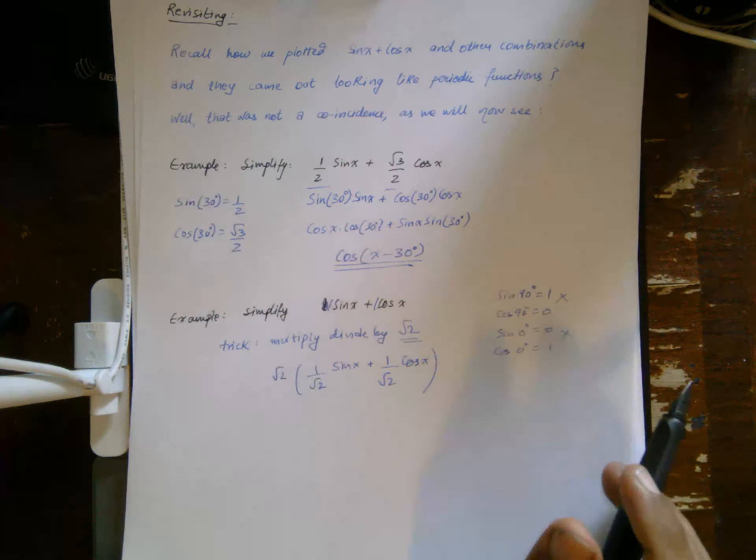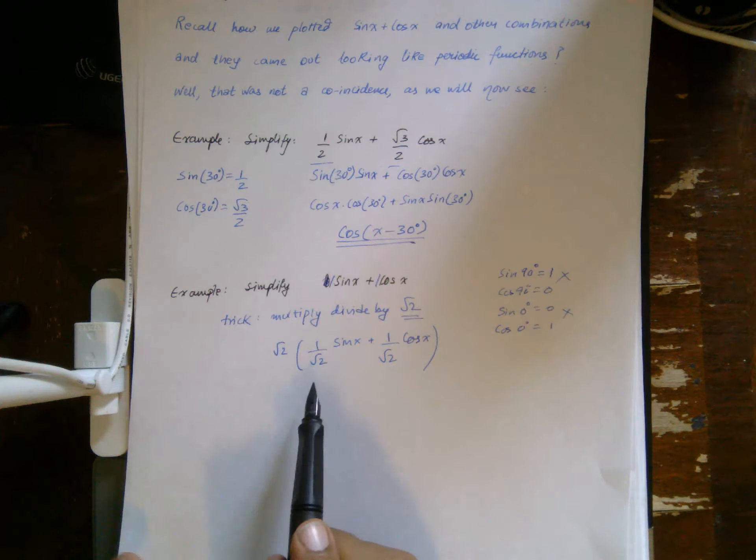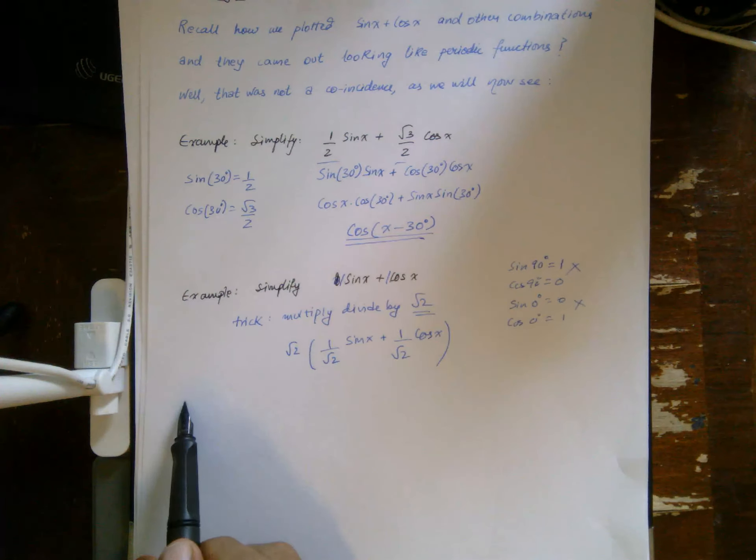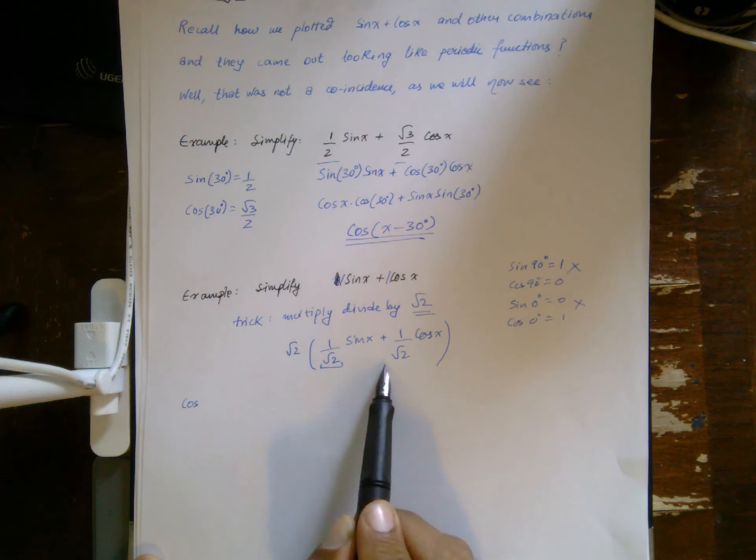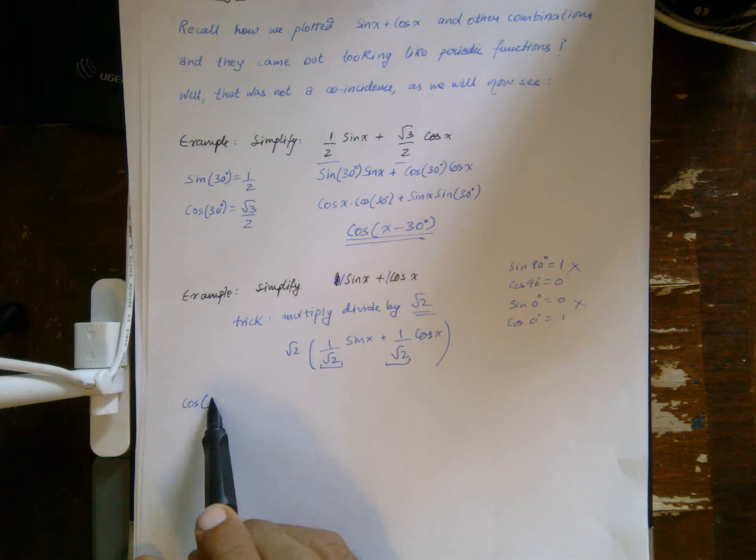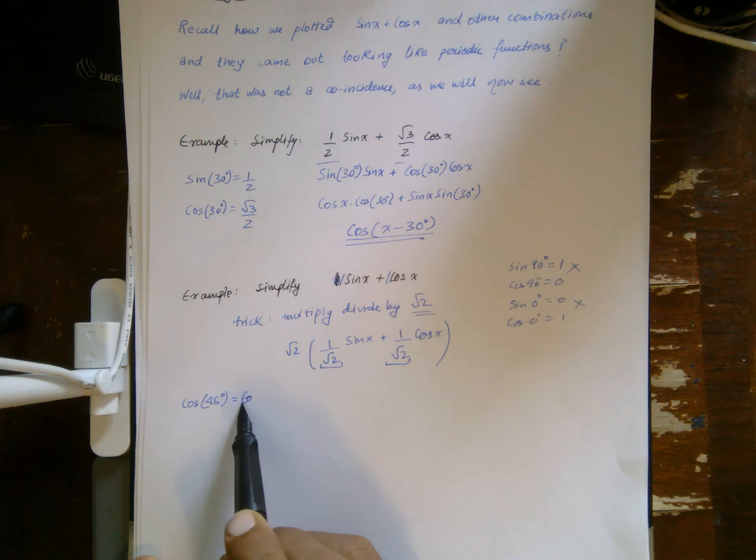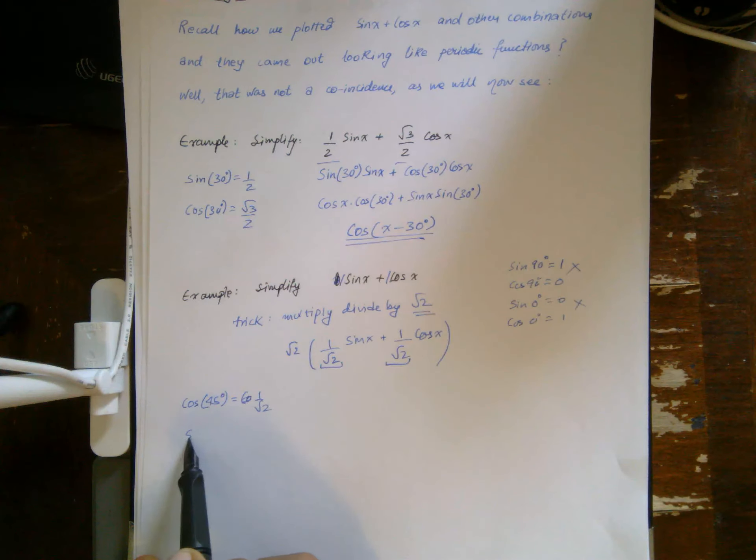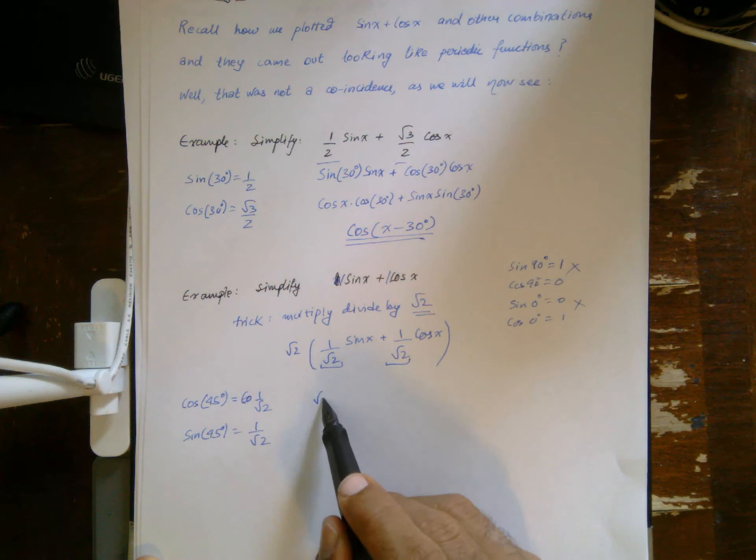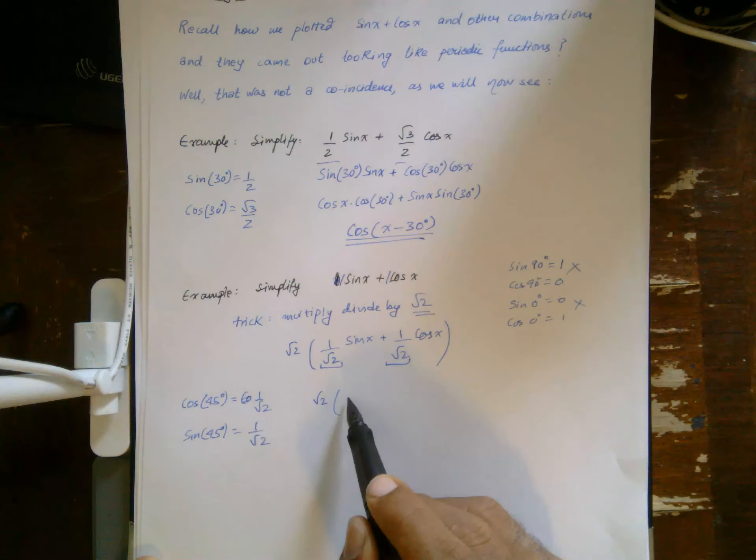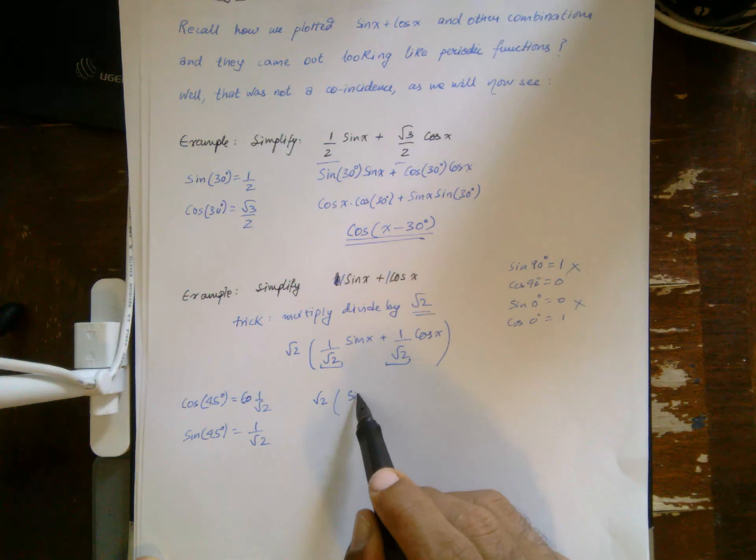Now when I do that, a useful thing happens, which is that I get these things in front of sine and cosine which are 1 over root 2, and I can use the fact that cosine 45 equals 1 over root 2, and sine 45 also equals 1 over root 2.